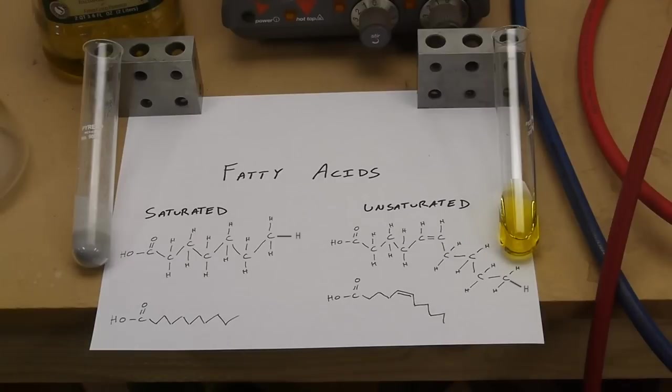For clarity, it's common not to draw the C's and H's in the molecular diagram. Down here I have the same molecule just without the C's and H's drawn. In the unsaturated case, the double bond is shown by this double line here.